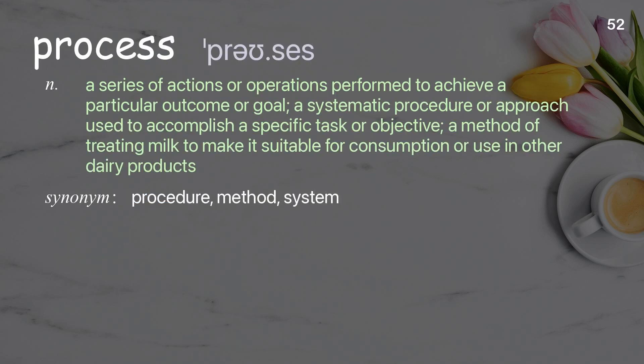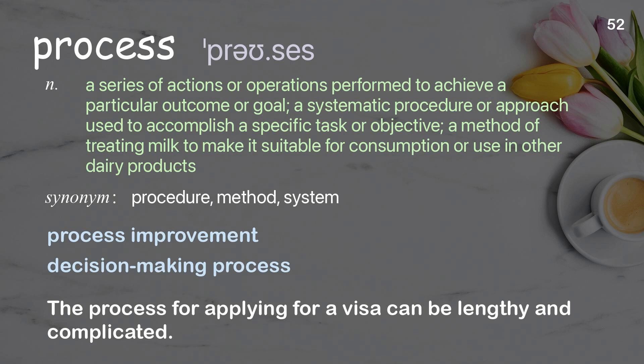Process: a series of actions or operations performed to achieve a particular outcome or goal; a systematic procedure or approach used to accomplish a specific task or objective. Examples: process improvement, decision-making process. The process for applying for a visa can be lengthy and complicated.